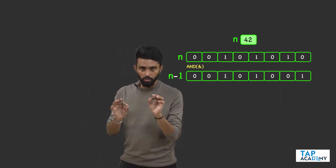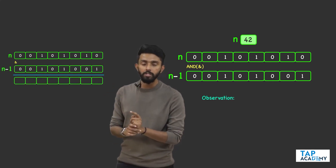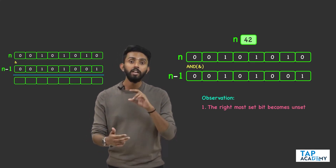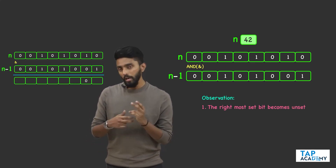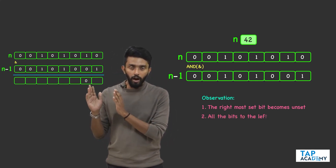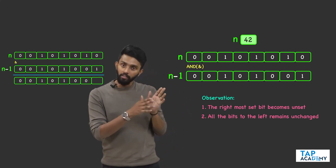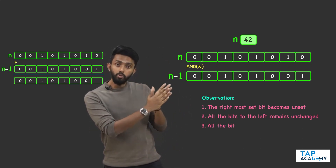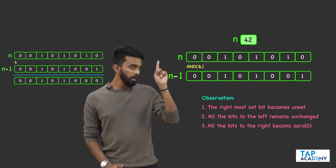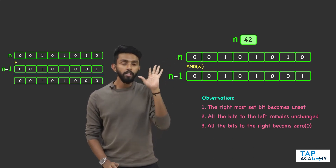What is the observation when you apply AND operation between n and n-1? First, the rightmost set bit becomes unset — it will be made zero. Second, all the bits to the left are going to remain the same. Third, all the bits to the right become zeros. The second bit was 1, it became 0. Left side everything remains the same, right side is 0.